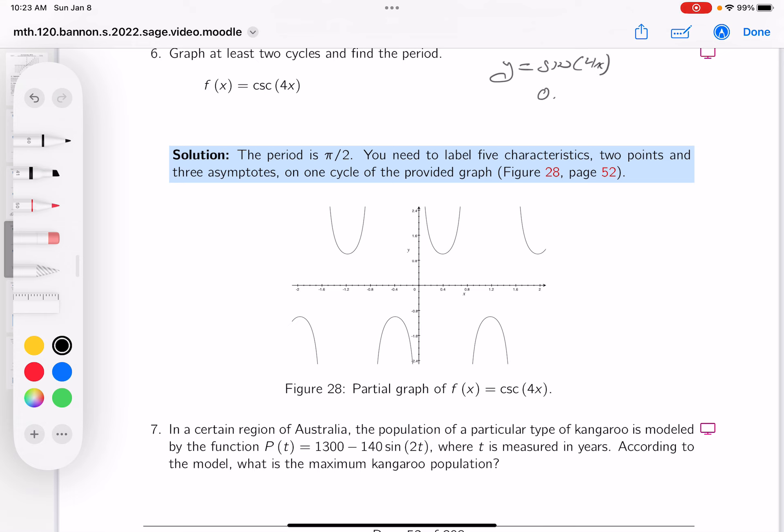So I'm going to say it begins at 0, pretty simple, and then it ends at, let's see, 4x would equal 2π when x is equal to π over 2.